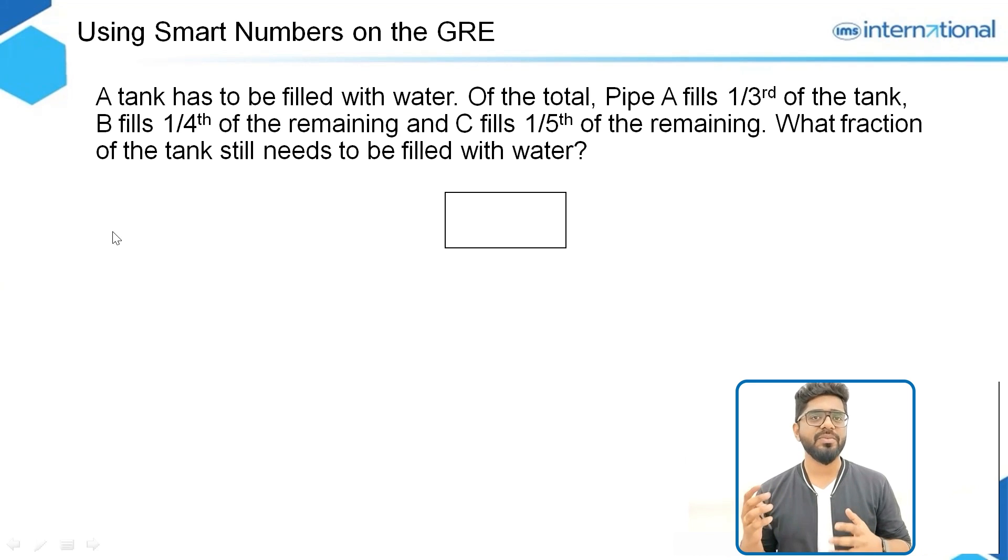Let's discuss one of the most common approaches that a lot of students follow to solve this particular question. Since the total has not been given to us, students often take the total value as x. So let's solve this further. If we take the total value as x, Pipe A fills one third of the tank, so A fills one third of x.